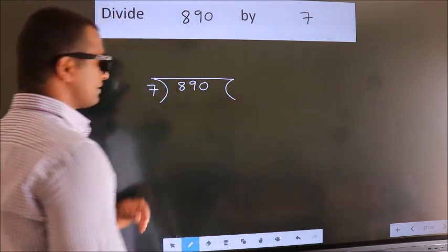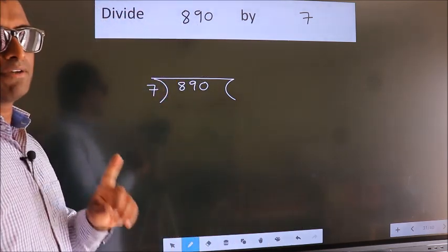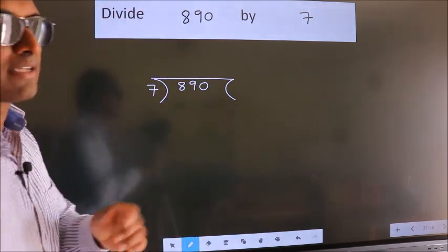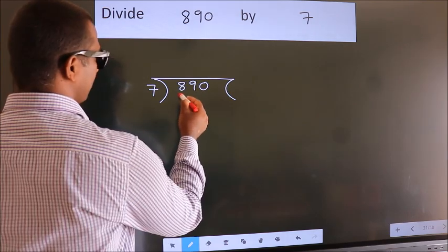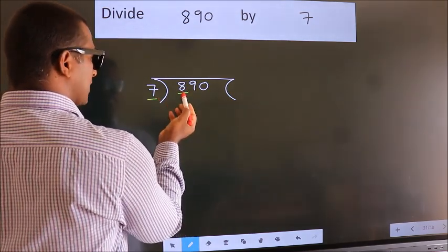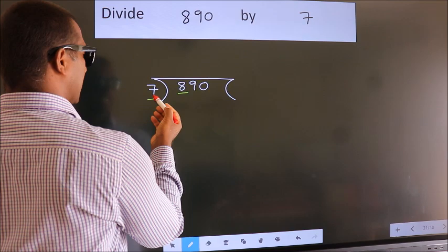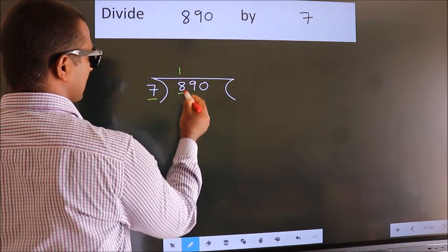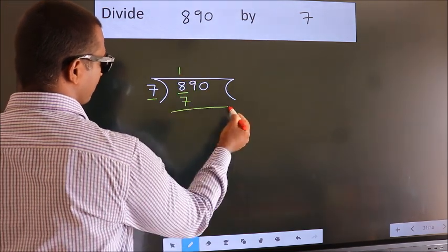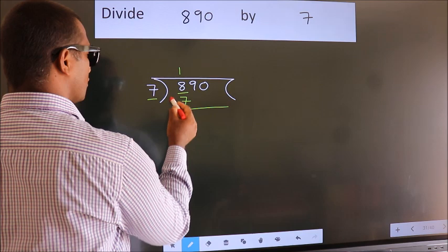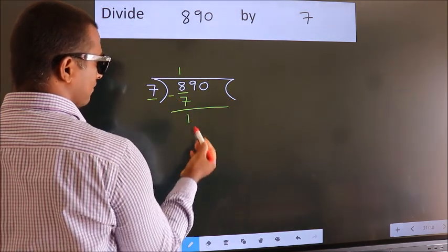This is your step 1. Here we have 8, here 7. A number close to 8 in the 7 table is 7 ones, 7. Now we should subtract. We get 1.